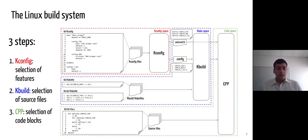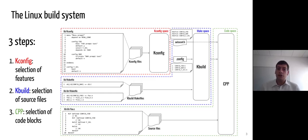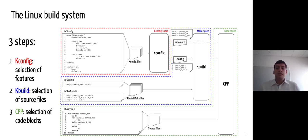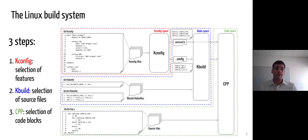This build system is made of three steps. First, the configuration step, called kconfig, consists in files defining the features and constraints between them. This step can also be assimilated as a feature model definition. When the user selects the desired features, the constraints are solved, and these features are then used in the two other steps, which participate in the derivation of the kernel variant.